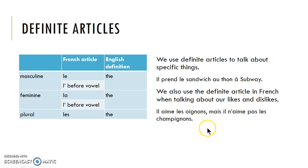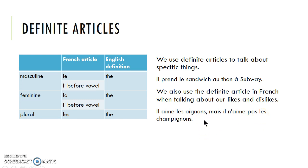We also use the definite articles in French when talking about likes or dislikes — those verbs like aimer, adorer, détester, préférer. Even when we use ne pas with aimer or adorer, we use these definite articles. So il aime les oignons, mais il n'aime pas les champignons. In French, we always use an article, so even though in English we can just say 'he likes onions,' in French you have to remember to put these articles there.